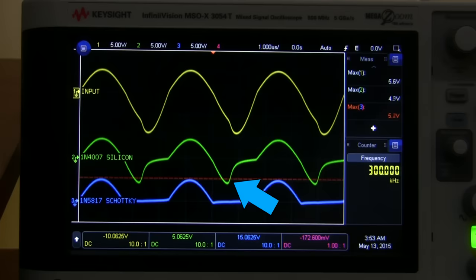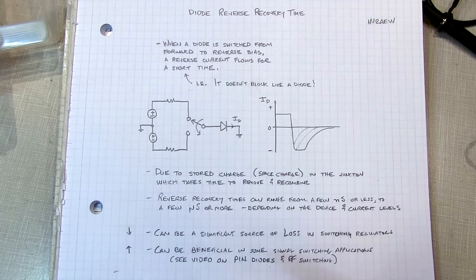Every diode takes a certain amount of time to switch from allowing forward current to blocking reverse current. Schottky diodes tend to be very quick, so that's why they're often used in medium to high frequency applications. If you want to learn more about this behavior and how to accurately measure the recovery time of a diode, enable annotations and check out Alan's excellent video on the subject.